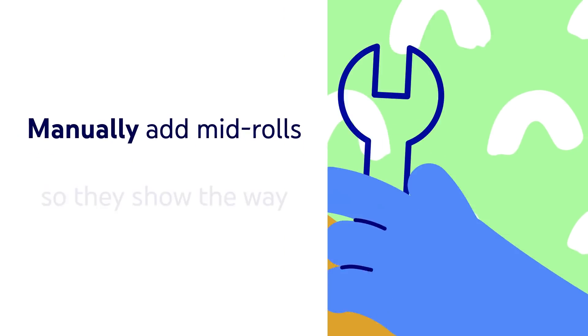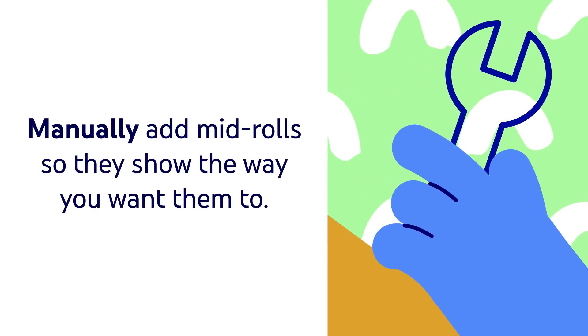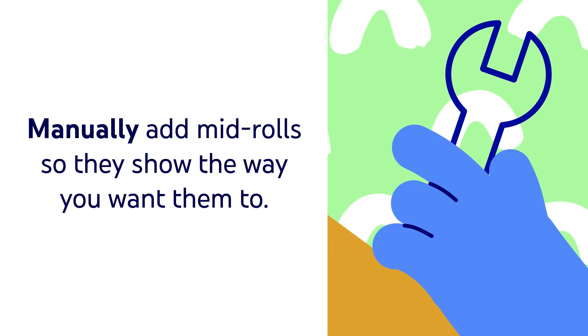Of course, in some cases you may have breaks purposefully built into your video, such as transition screens or scene changes. In this case, you may prefer to manually add mid-rolls so they show the way you want them to. You can do this using the ad breaks tool. This tool lets you create, preview, and edit automatically generated or manually set mid-roll ad breaks.